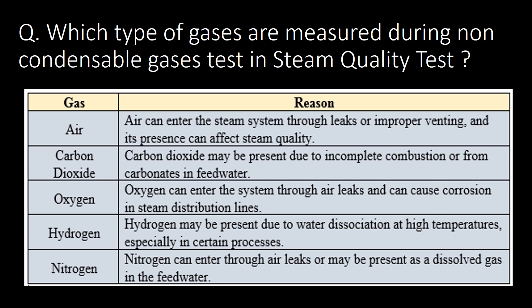Which types of gases are measured during the non-condensable gases test in steam quality testing? During steam quality testing, air, carbon dioxide, oxygen, hydrogen, and nitrogen are measured as non-condensable gases.